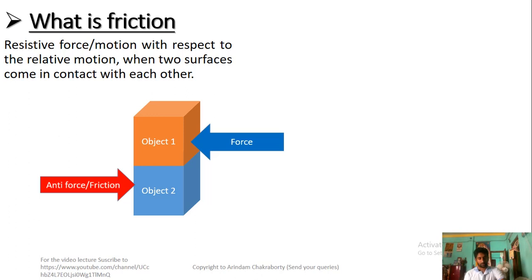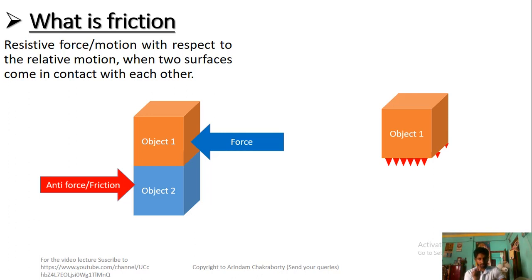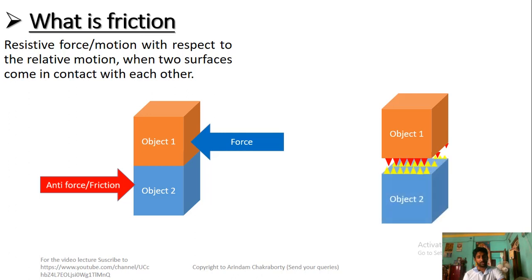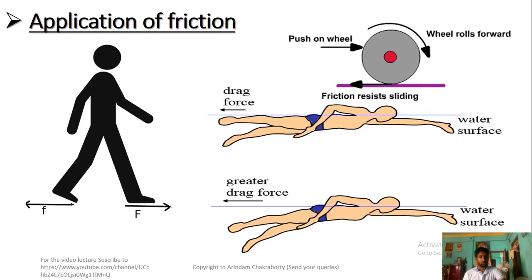To understand why friction happens, consider object 1 at the microscopic level. We can see triangular shapes — crests and peaks — on its magnified surface. Similarly, we find crests and peaks on object 2. When a peak gets stuck between two peaks of object 2, they become interlocked and restrict motion, giving a resistive force. That resistive force is nothing but the frictional force.